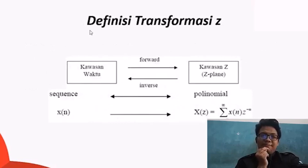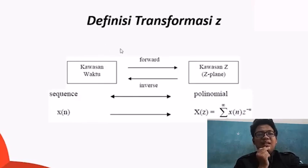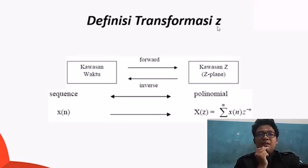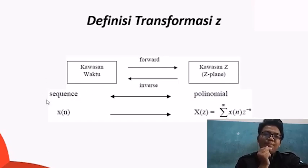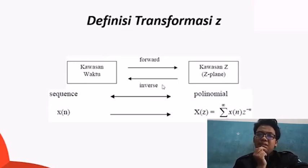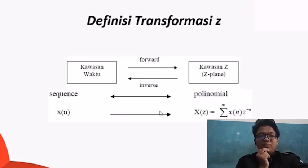Definisi transformasi Z: pertama-tama sinyal akan berada di kawasan waktu dan akan ditransformasikan ke kawasan Z atau Z-plane. Bentuk dari transformasi Z sendiri untuk di kawasan Z dan di kawasan waktu itu berbeda, dimana kawasan waktu terbentuk sekuens.